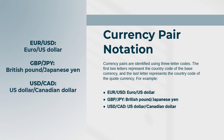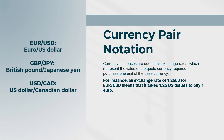Currency pair notation: currency pairs are identified using three-letter codes. The first two letters represent the country code of the base currency and the last letter represents the country code of the quote currency. For example: EUR/USD (euro/U.S. dollar), GBP/JPY (British pound/Japanese yen), USD/CAD (U.S. dollar/Canadian dollar). Currency pair prices are quoted as exchange rates, representing the value of the quote currency required to purchase one unit of the base currency. For instance, an exchange rate of 1.2500 for EUR/USD means it takes 1.25 USD to buy one euro.